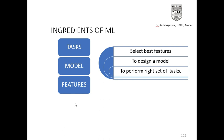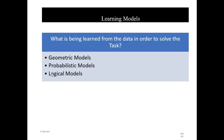Hello students. So we will talk about geometric models today. Just to reiterate, we were looking at ingredients of machine learning where we were selecting the best features to design a model to perform the right set of tasks. Now what are the kind of models that I can get? I can get three kinds of models: geometric models, probabilistic models, and logical models. So today we will talk about geometric models.